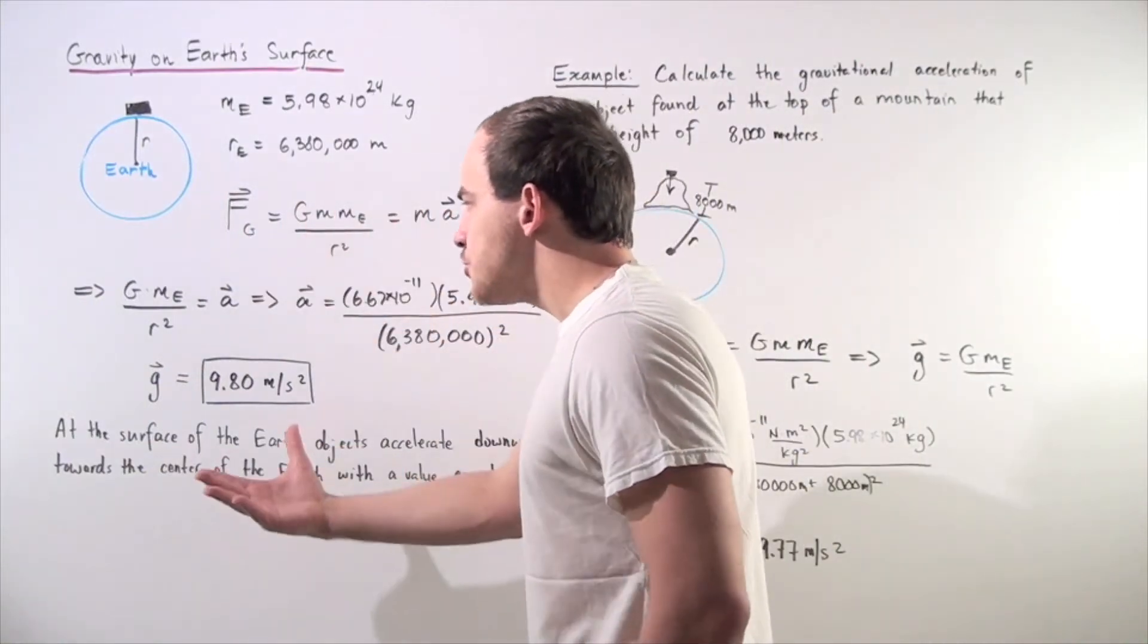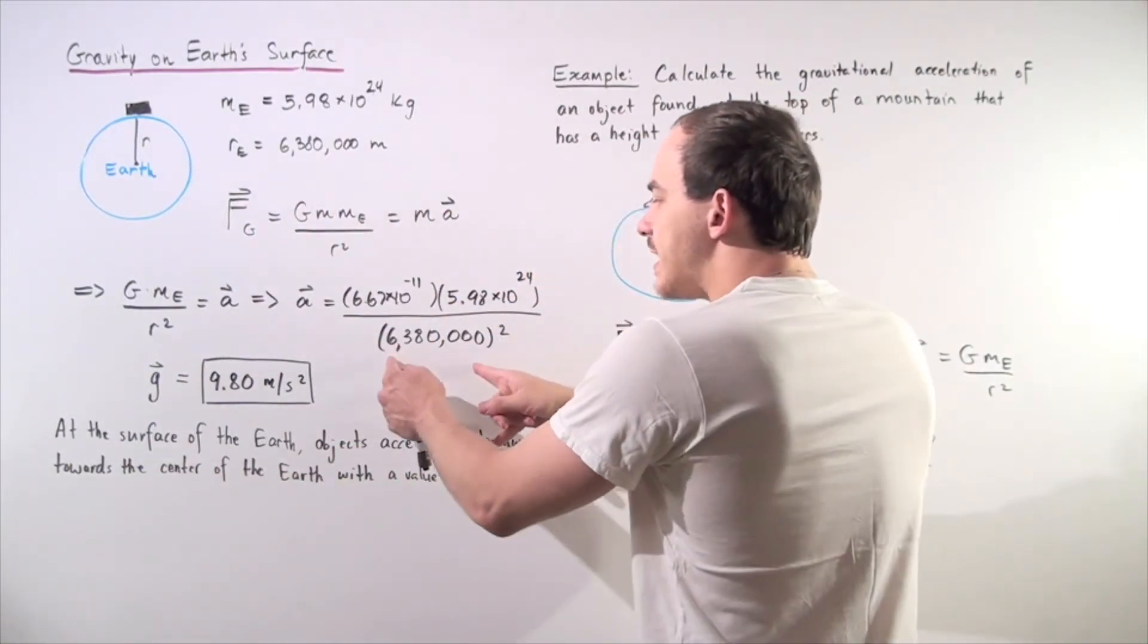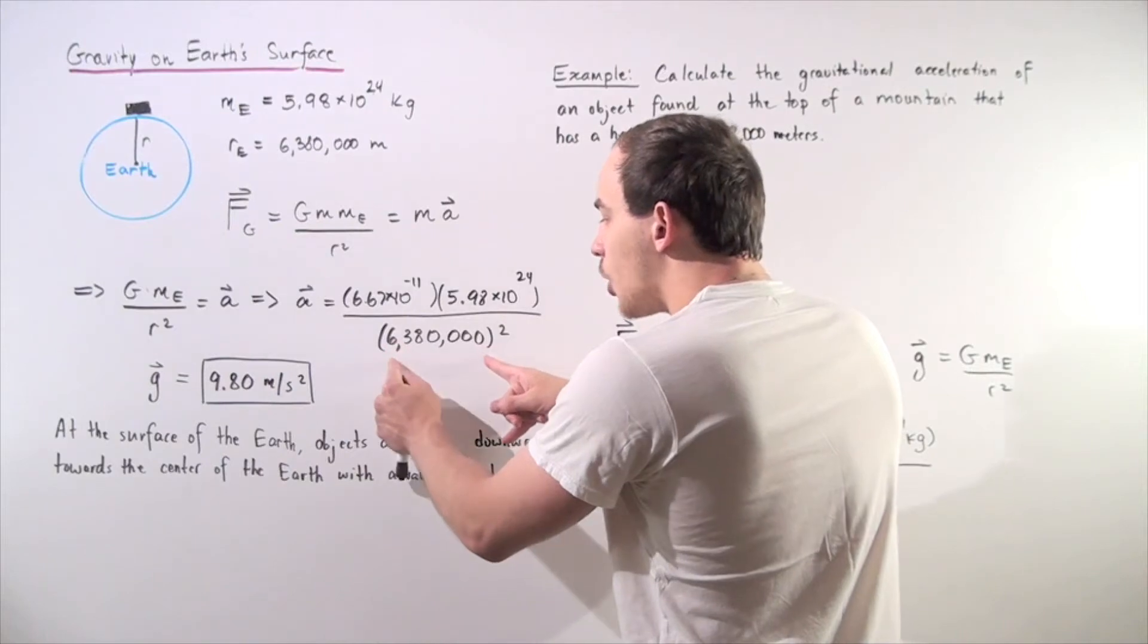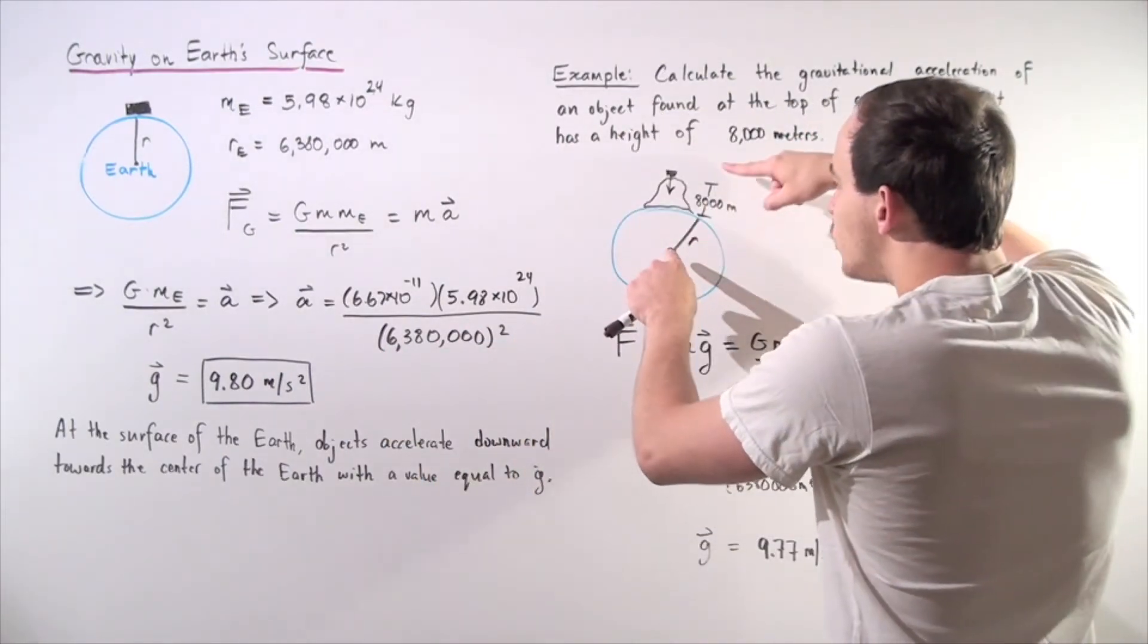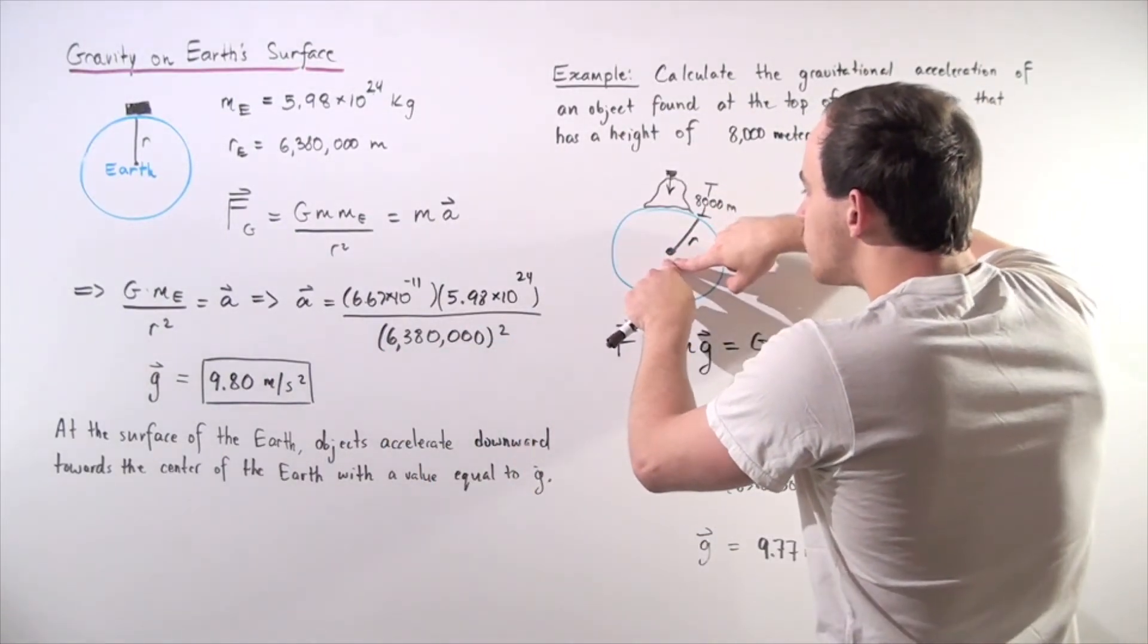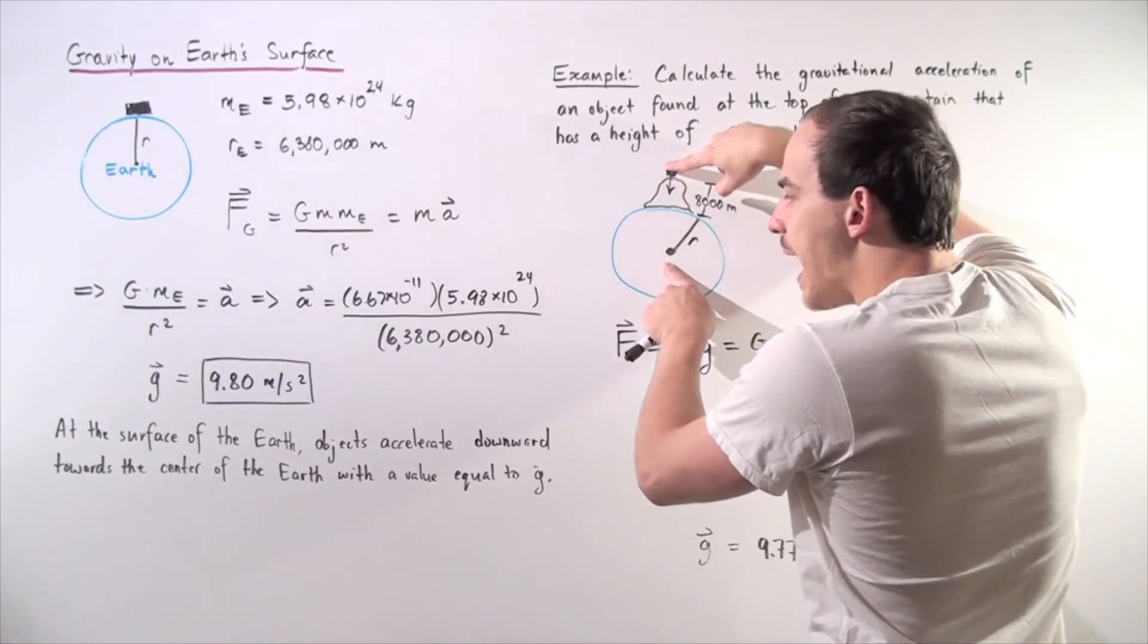We have the same exact procedure, except now, instead of using the radius of the Earth, we have to use the actual distance from the center of the Earth to the top of the mountain.